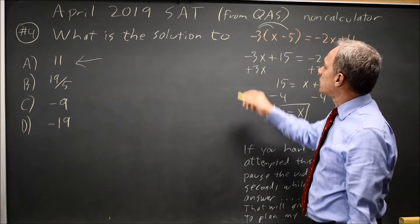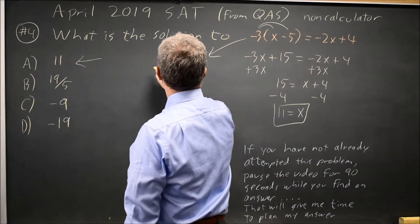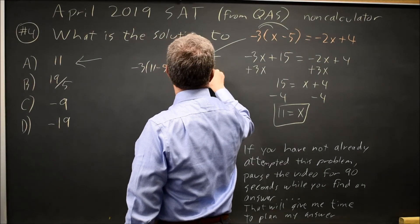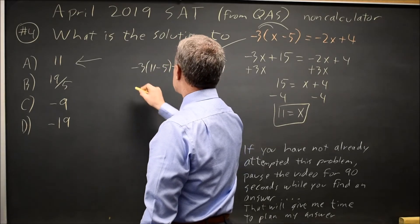If you're not sure, you can always substitute that into the equation. Negative 3 times 11 minus 5 equals negative 2 times 11 plus 4. Let's check and see if that works.